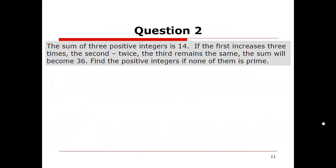Let's try question 2. The sum of 3 positive integers is 14. If the first increases 3 times and the second becomes double and the third remains the same, the sum will become 36. Find the positive integers if none of them is a prime number.